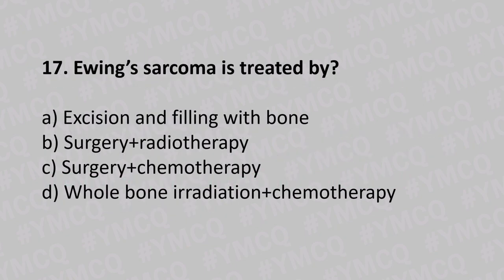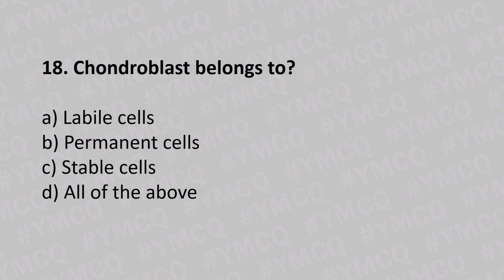Question number seventeen: Ewing sarcoma is treated by option A excision and filling with bone, option B surgery plus radiotherapy, option C surgery plus chemotherapy, option D whole bone irradiation plus chemotherapy. The answer is option B, surgery plus radiotherapy.